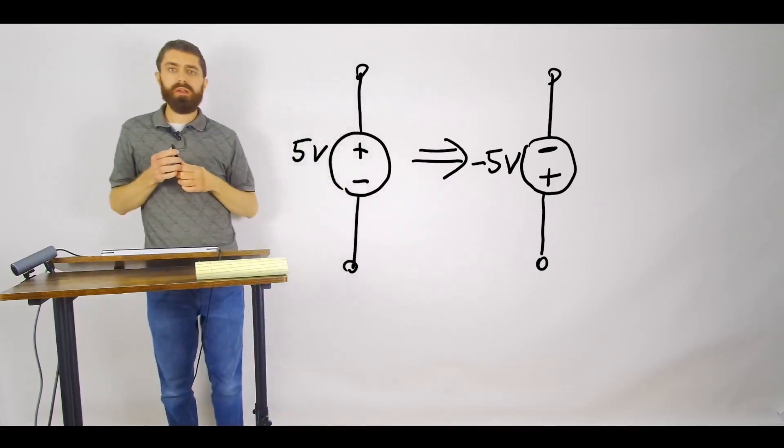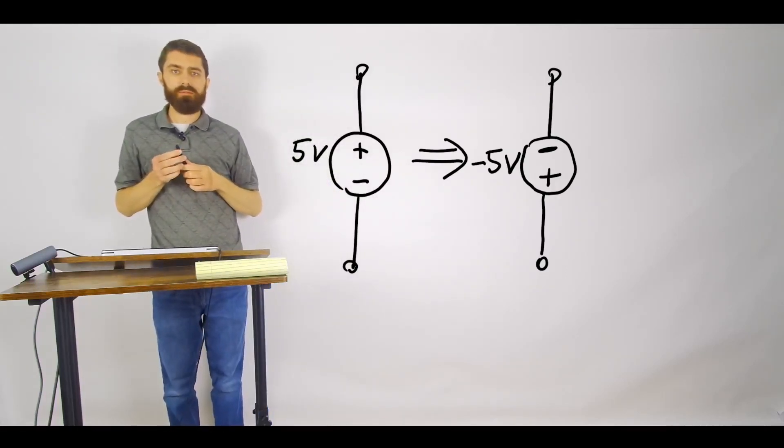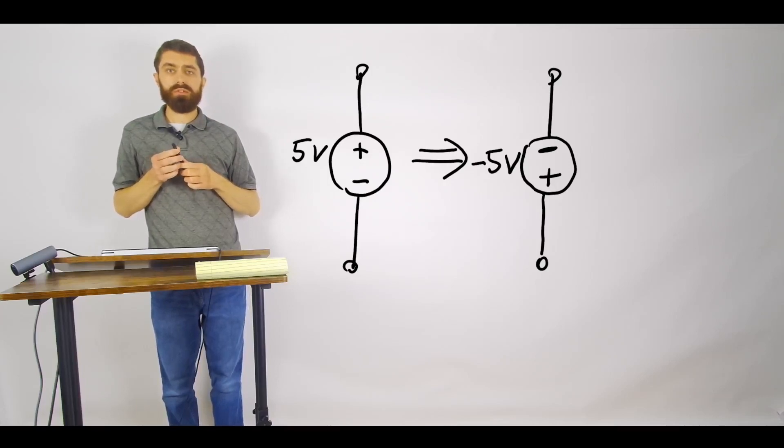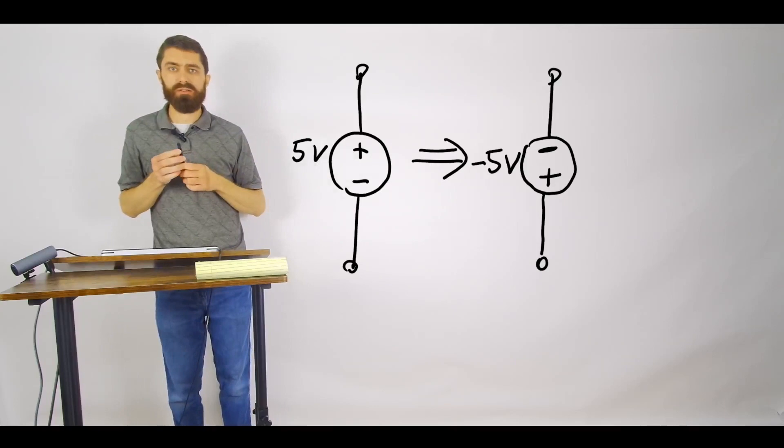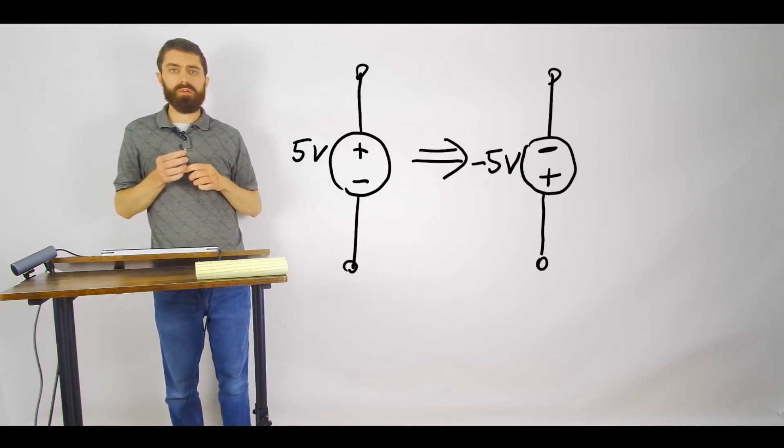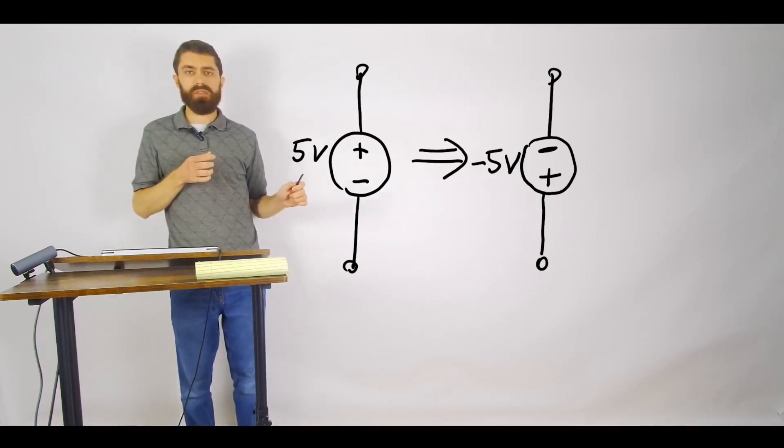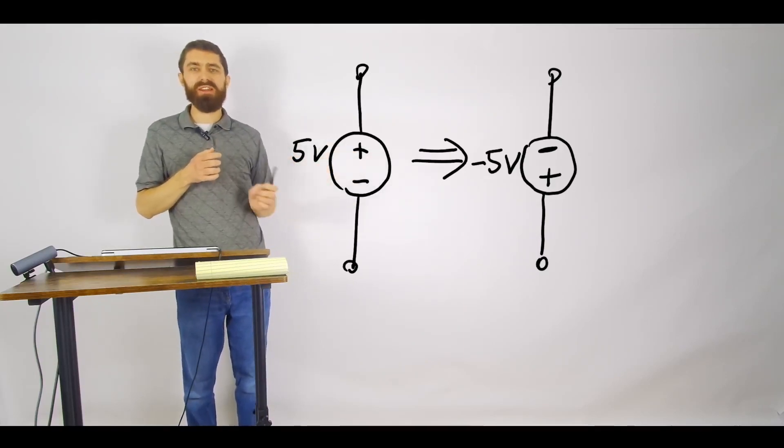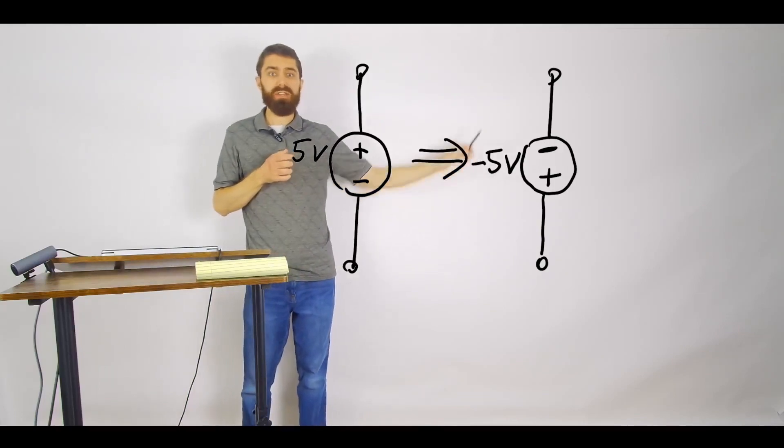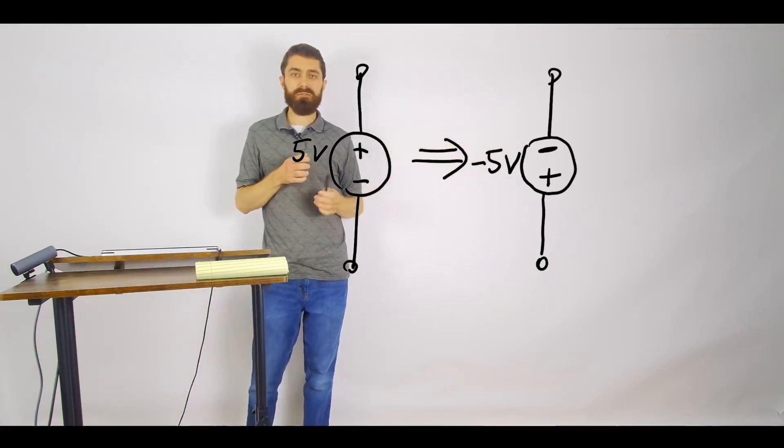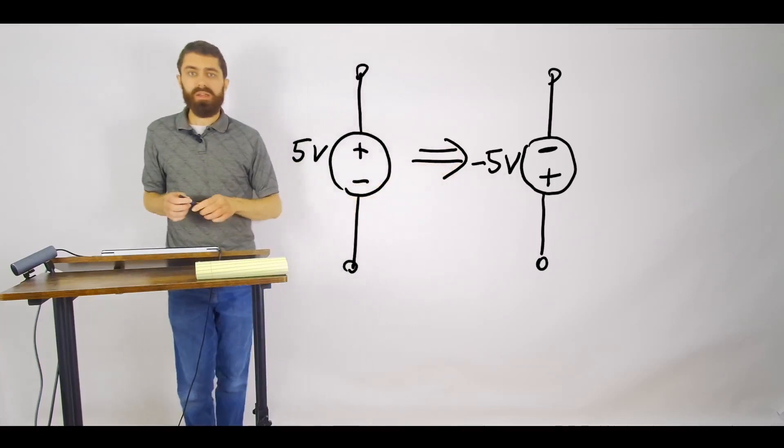So that's something that is important to understand when it comes to dealing with signs and circuits. You're given usually like a magnitude and you have a direction. But if you specify the magnitude is negative, then you know that it's actually flipped. It's a very similar thing when you're talking about current.